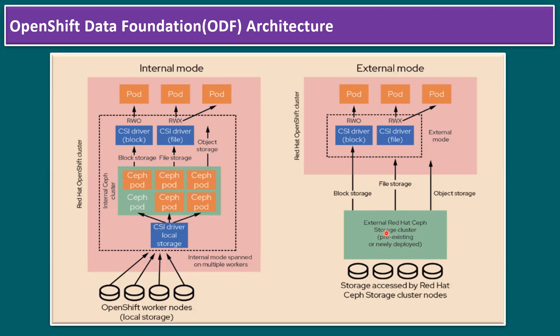Once we configure the Red Hat Ceph storage cluster, it will have the same features: file storage, block storage, and object storage. The benefit of external mode is that this storage can be shared not only to one OpenShift cluster but to multiple OpenShift clusters. For example, if in our demo environment we have OpenShift clusters 1, 2, and 3, and we want to provide ODF access to all three clusters, we recommend configuring ODF in external mode. Internal mode ODF is dedicated to only one OpenShift cluster and cannot be shared to other clusters — that is the key difference between internal and external mode.